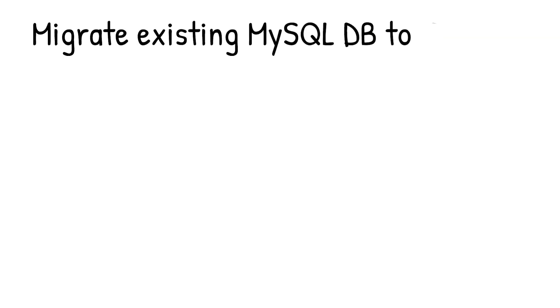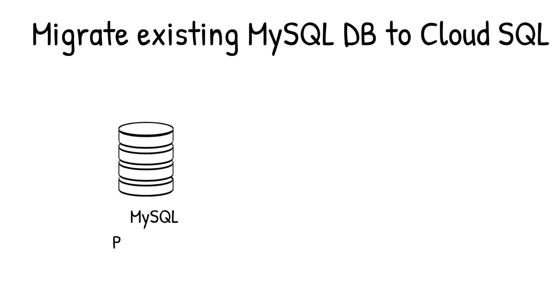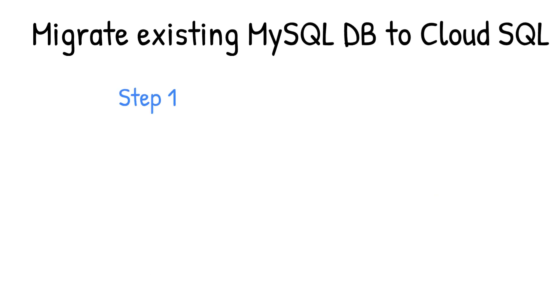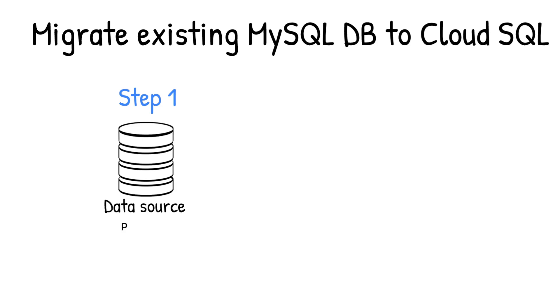Now, how can you migrate an existing MySQL database to Cloud SQL? Cloud Console makes it very easy by providing a Migrate Data button, which guides you through easy steps. First, you provide your data source details — things like public IP address, port number, and your replication credentials.